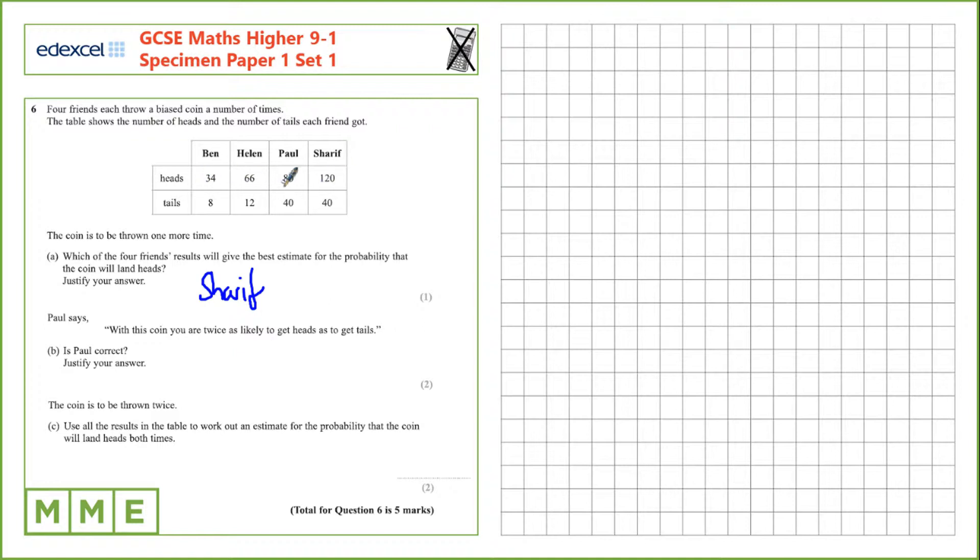So the number of heads thrown is the sum of these, which is 300, and the number of tails thrown is 100. So there are three times as many heads as tails. So Paul is incorrect. There's actually three times as many heads.